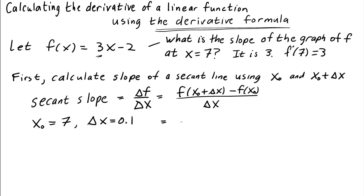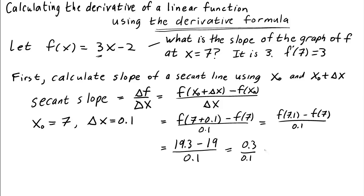So in this case the secant slope is f of 7 plus 0.1 minus f of 7 over 0.1. This is just f of 7.1 minus f of 7 over 0.1. f of 7.1 is 19.3, f of 7 is 19. So the derivative of the secant line is 0.3 over 0.1, or just 3. That's not surprising. We knew the slope of the line is 3, and of course its secant line is the same thing. And so its slope must be 3.